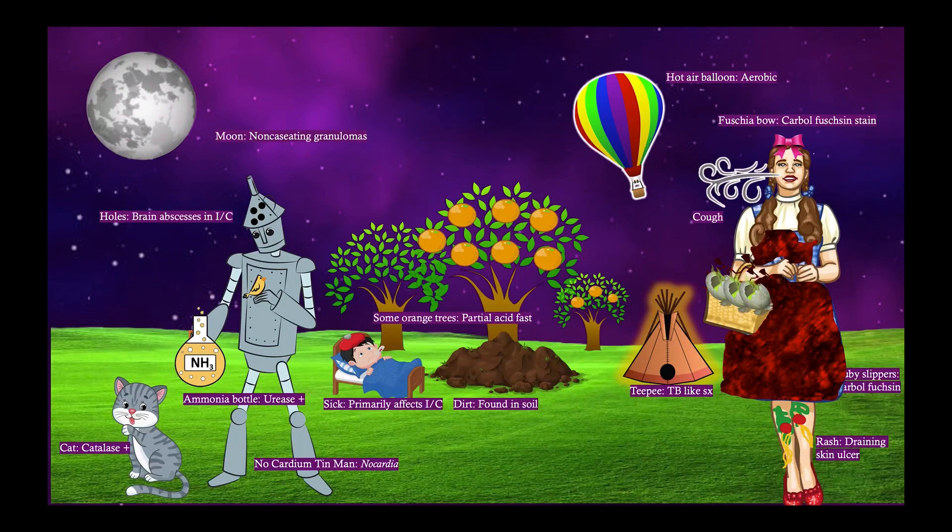And then notice our poor Tin Man here. On the top of his head, he's got these little holes on his hat. And that's to remind you that this can cause brain abscesses. And when they happen they tend to be multifocal, unlike actinomyces which causes just merely solitary brain abscesses. So multifocal brain abscesses because of the hematogenous spread. And again this happens more in immunocompromised patients.